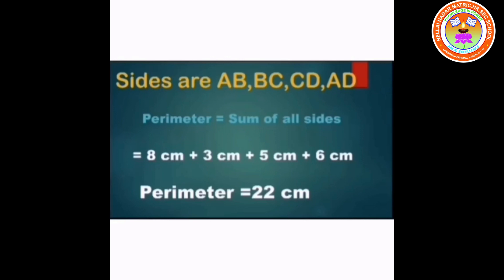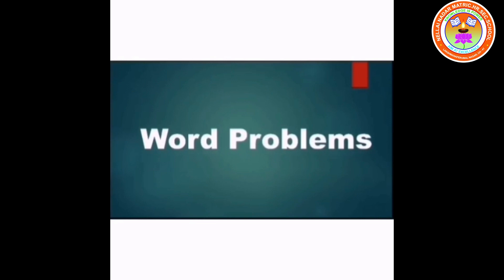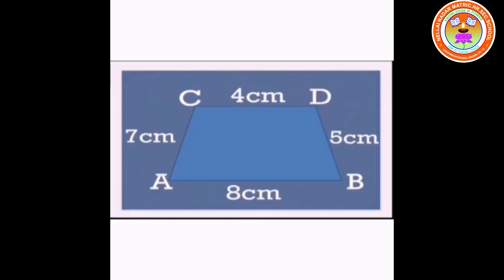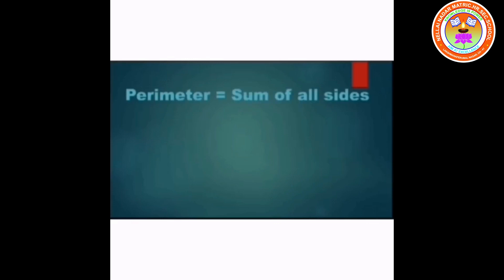Now let me do a word problem. The first problem: the sides of the trapezoid measure 8 cm, 7 cm, 4 cm, and 5 cm respectively. What is the perimeter of the trapezoid? AB is 8 cm, BD is 5 cm, DC is 4 cm, CA is 7 cm. Perimeter equals 8 plus 5 plus 4 plus 7. Perimeter is equal to 24 cm.